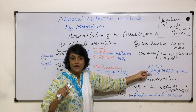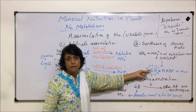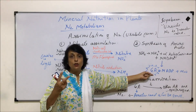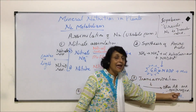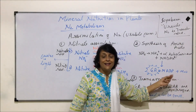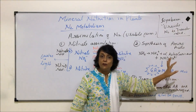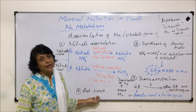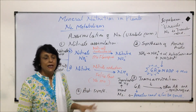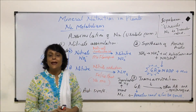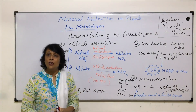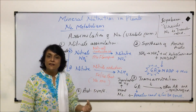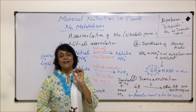Initially only glutamic acid and aspartic acid are the two amino acids synthesized, and from those, by transamination all other amino acids get synthesized, and then using those, proteins can also be synthesized. This is how in plants nitrogen fixation takes place and using that nitrogen, protein gets synthesized.